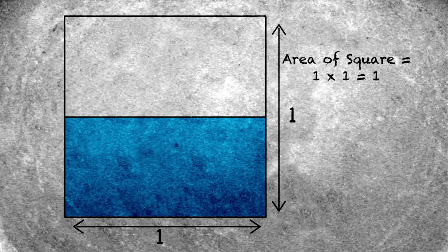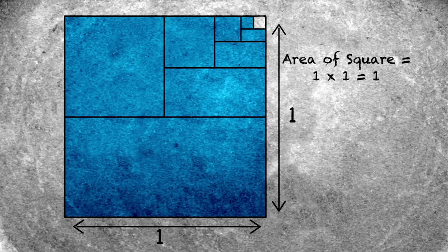Let's start with a square that has area one unit. Now let's chop the square in half, and then chop the remaining half in half, and so on. While we're doing this, let's keep track of the areas of the pieces.